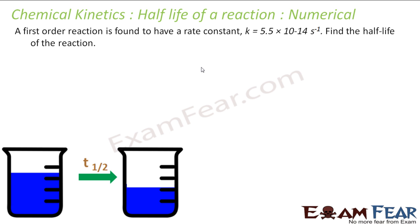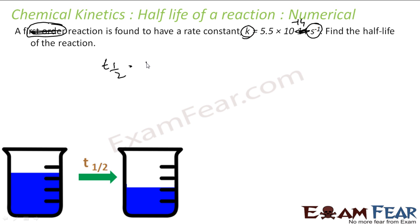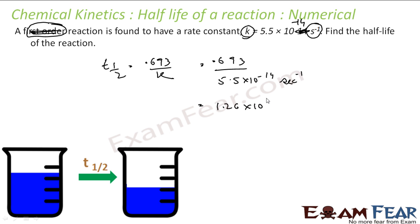Let's take a numerical. A first-order reaction is found to have rate constant K = 5.5 × 10⁻¹⁴ per second. Just from the unit (per second) we can confirm it is first order. Find the half-life: T½ = 0.693 / K = 0.693 / (5.5 × 10⁻¹⁴) = 1.26 × 10¹³ seconds. That is the time for concentration to become half.